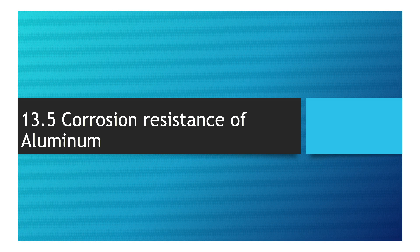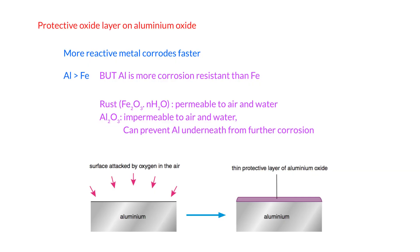We're going to talk about the corrosion resistance of aluminium. As we all know, the more reactive a metal is, the faster it will corrode. For example, magnesium is more reactive than iron, so it will lose electrons much faster. Even though aluminium is more reactive than iron, you will find that aluminium is more corrosion resistant than iron.